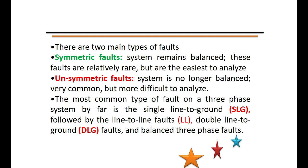The most common types of faults occurring in power systems are: the single line-to-ground fault (SLG fault), followed by the line-to-line fault (L2L fault), and the double line-to-ground fault (DLG fault). There is also another unbalanced fault called the series fault, which occurs because of the opening of a circuit.